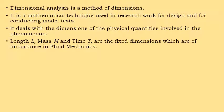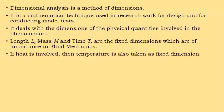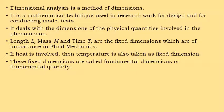Commonly, length L, mass M, and time T are the fixed dimensions, which are most important in fluid mechanics. These three dimensions are taken as the base dimensions. In cases where temperature is also taken into consideration, temperature is also taken as a fixed dimension. These fixed dimensions are called fundamental dimensions, primary dimensions, or fundamental quantities.